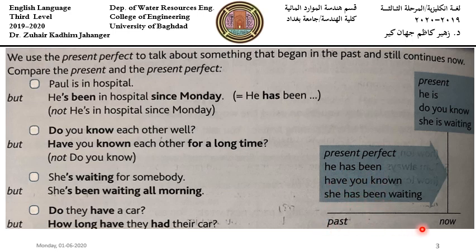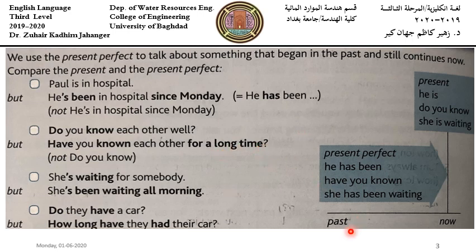Present perfect goes from the past to now: 'he has been,' 'have you known,' 'she has been waiting.' Present simple is at the time of talking — it is now: 'he is,' 'do you know,' 'she is waiting.' For example, 'do you know each other well' is now, but 'have you known each other for a long time' goes from the past till now. 'She is waiting' is now, but 'she's been waiting all morning' extends from the past to now.